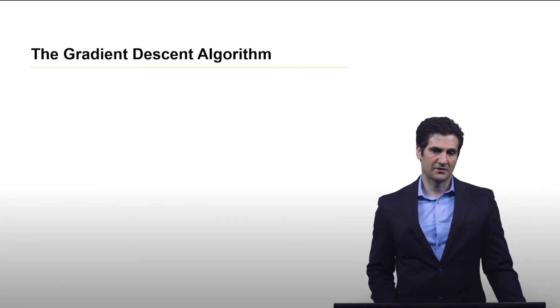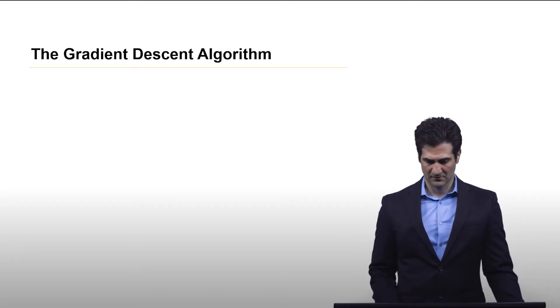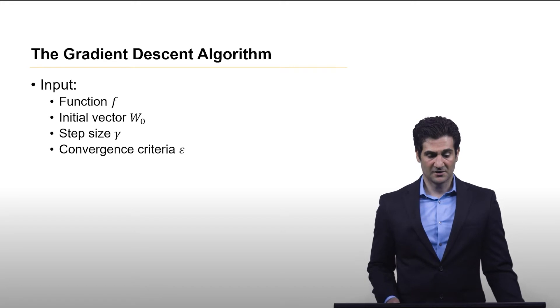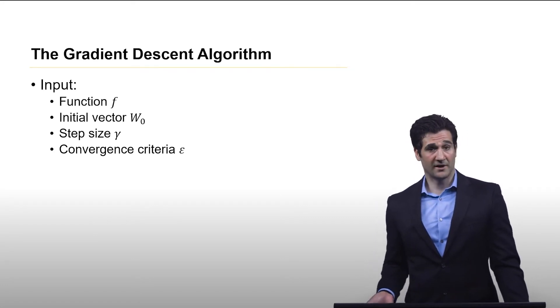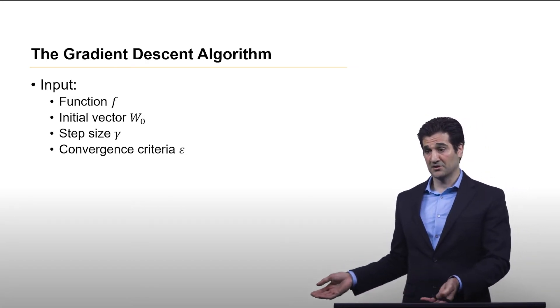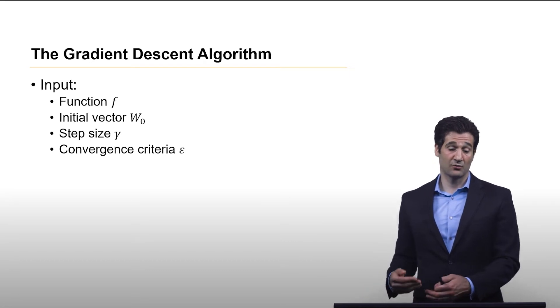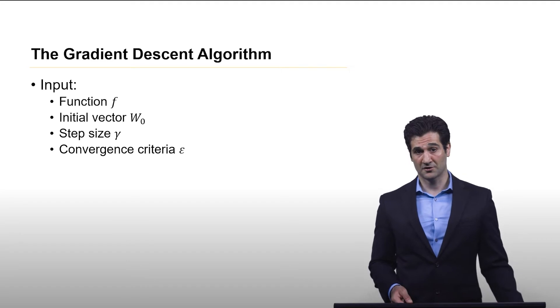Okay, with that in mind, let's define the algorithm. As input, we have a function f, which is what we're trying to find the local minima for. We have some initial vector of weights. This is just a guess. And there's work on different ways to come up with the initial weight vector, particularly in deep learning, this is quite important.